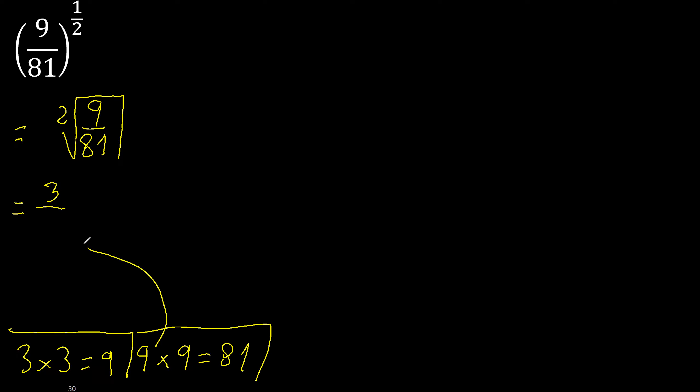The fraction 3 over 9 can be simplified because both numbers can be divided by the same number. Divided by 3: 3 divided by 3 is 1, and 9 divided by 3 is 3. The result is 1/3.